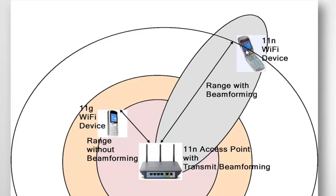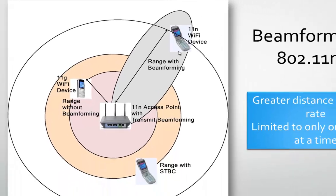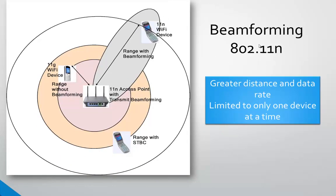Beamforming allows a client to be further away yet still receive a strong signal, and we know that a strong signal helps with data rate. The problem with beamforming in the 802.11n standard is it's limited to only one device at a time. Other devices receiving energy from the access point will get the signal, but they will not get the beamforming that the one client receives.